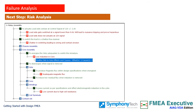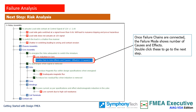As you work with the FMEA executive software, you will discover that severity, occurrence, and detection ratings can be assigned to failures. Severity ratings become relevant to failure effects, which are failures associated with the higher level than the focus element. Detection and occurrence ratings become relevant to failure causes, which are failures associated with the level lower than the focus element. As a result of connecting the failure chain, you will notice that FMEA executive now shows causes and effects connected as a node to each failure mode under focus. Double click this node to go to the next step.